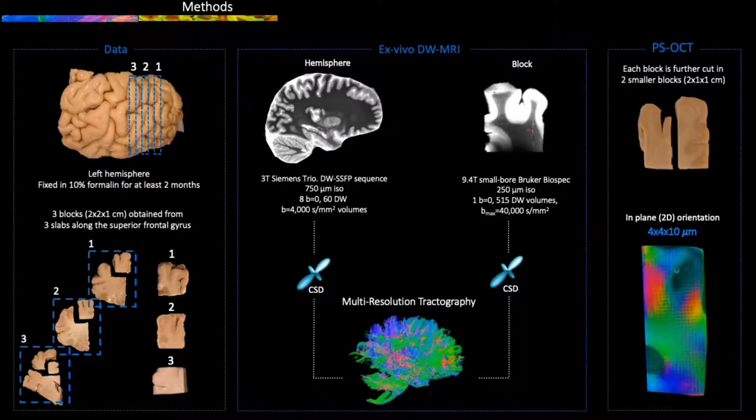Each block was further subdivided into two smaller blocks, and direct information of fiber orientation at much higher resolution was obtained using polarization-sensitive optical coherence tomography.